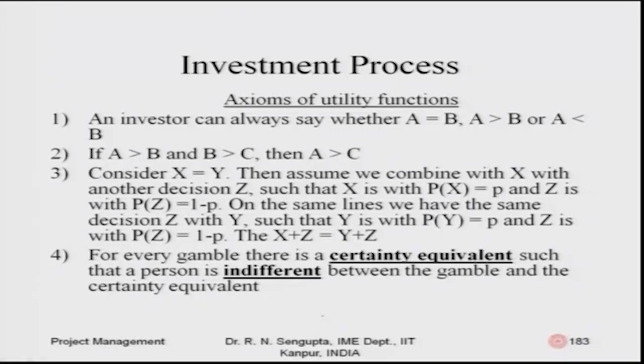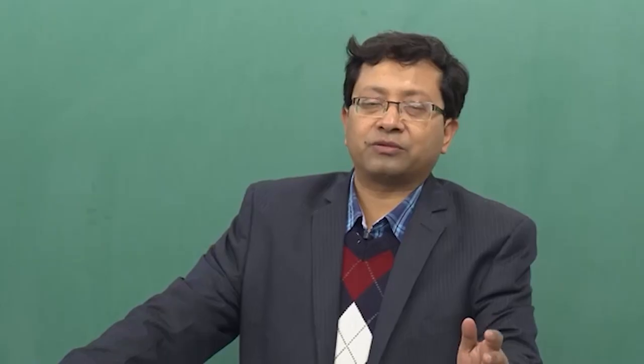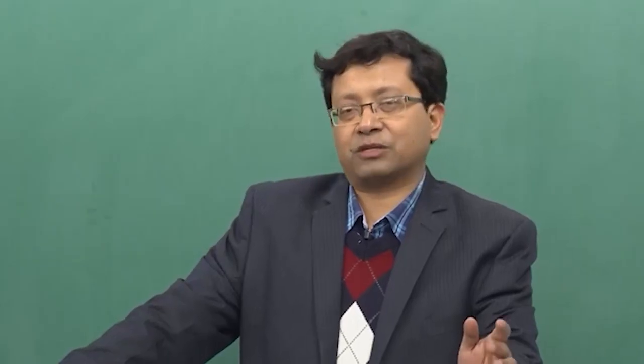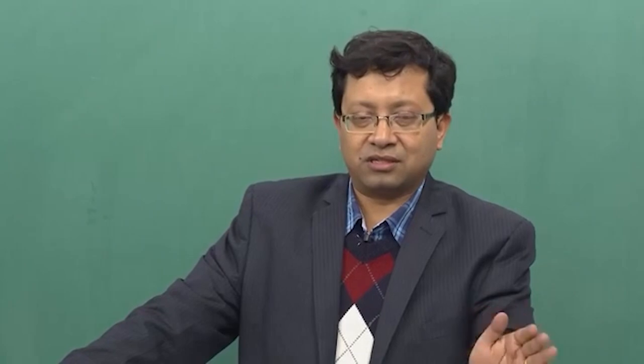If I prefer A over B and prefer B over C, then logically I would always prefer A over C. This is the transitivity axiom, but in general in many practical cases it may not be true.